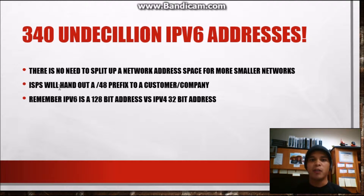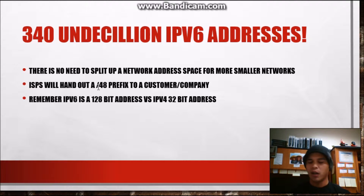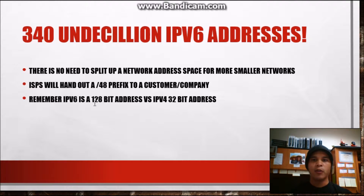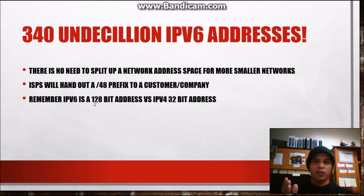ISPs will hand out a slash 48 prefix to a customer or company. Remember, there are 128 bits in an IPv6 address, versus IPv4's 32-bit address. So when it comes to network bits and host bits, if an ISP gives you 48 network bits, that leaves you with 80 bits for the host. Holy crap — when subnetting IPv4 we're only used to like 10 host bits giving us around 1,022 users. But with 48 networking bits and 80 host bits, that is just so many hosts and IP addresses.